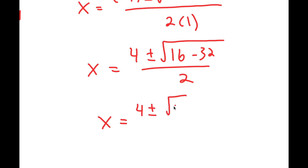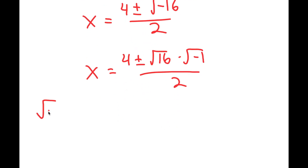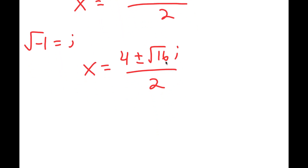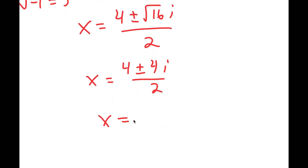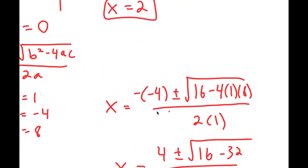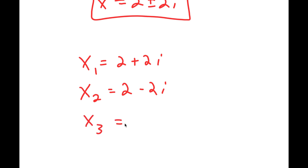This turns into 4 plus or minus the square root of negative 16 over 2. I can rewrite the square root of negative 16 as the square root of 16 times the square root of negative 1, and the square root of negative 1 is equal to i. So I get x equal to 4 plus or minus 4i over 2, which turns into 2 plus or minus 2i. So my three solutions are x equals 2 plus 2i, x equals 2 minus 2i, and x equals 2.